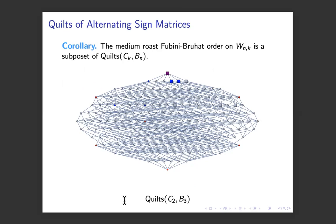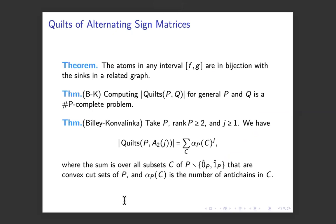And one of the corollaries, of course, is that the medium roast fubini order sits inside of, for w in k, it sits inside quilt ck comma bn. Now, it kind of sits in there sort of sparsely for c2 cross b3. If you look at only the purple or blue colored dots, that would be the medium roast order. And so it's sparse. There's a lot more to these posets. It doesn't really make the data a whole lot easier to manage because you added so much. Except that you do have some nice properties.